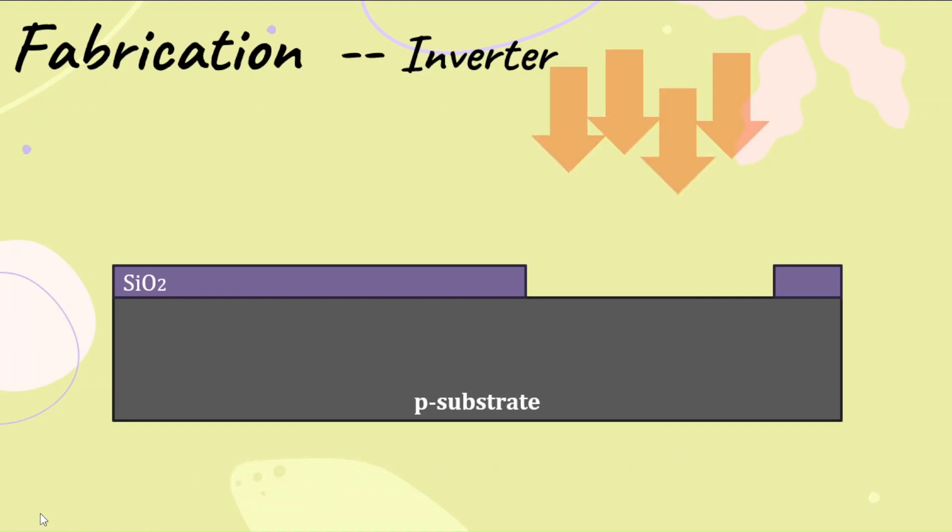In the next step, we create the n-well. In the creation of n-well, there are two important processes. One is ion implantation; the other one is diffusion. In ion implantation, the impurities are shot into the layer or wafer directly so that they penetrate and form an n-well layer.